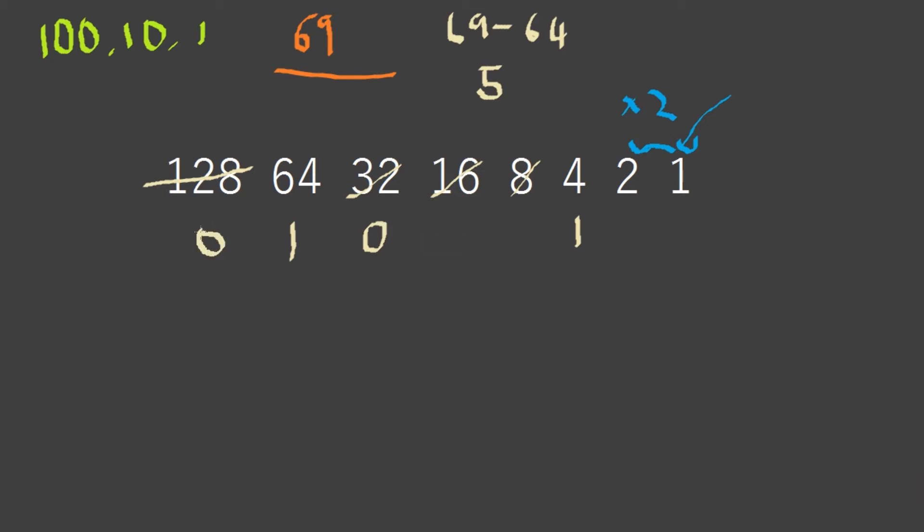You add a zero for each place that doesn't fit. When 4 goes into 5, you minus 4 from 5 and it becomes 1. Can 2 go into 1? No, it cannot. Can 1 go into 1? Yes.